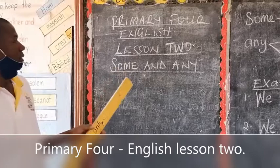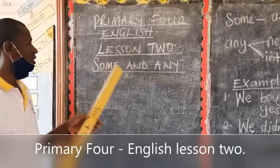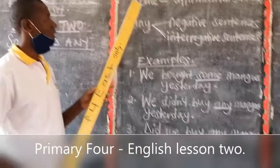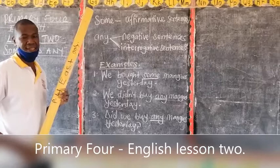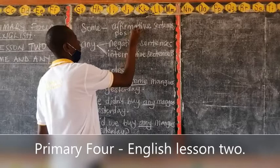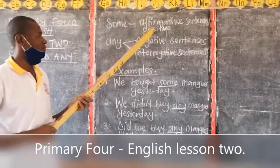Some and any — these two words are used to refer to quantity or number. When you are referring to quantity or number, you can use either some or any. If you look at the word some, it is only used when a sentence is affirmative. Another word for affirmative is positive. So we can say either affirmative or positive — in any sentence which is affirmative or positive, we use the word some.